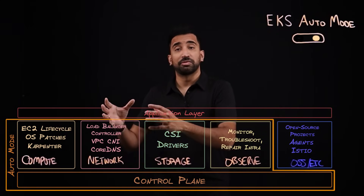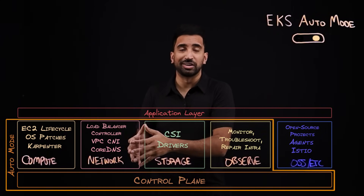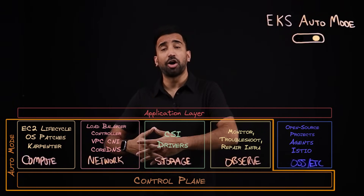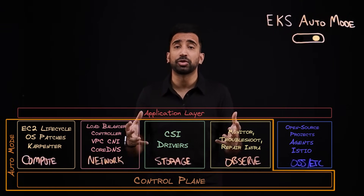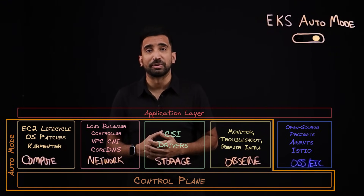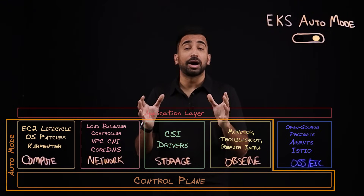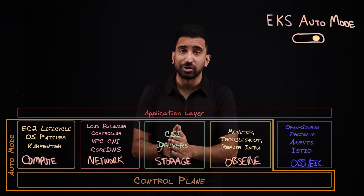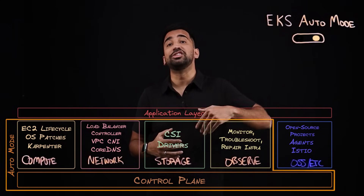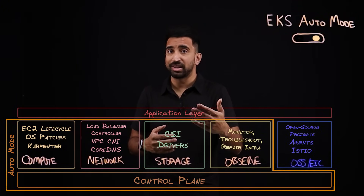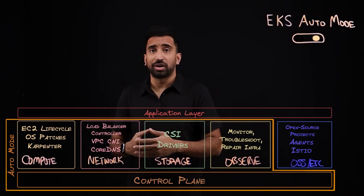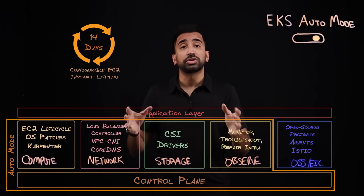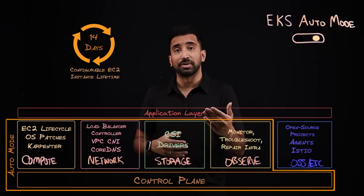One thing to mention: for things like the Karpenter controller, you no longer have to worry about managing a dedicated node just for Karpenter. In fact, for all of these core capabilities, you don't have to worry about the compute — that's going to be managed for you. For EKS upgrades, you still get to decide when you want to roll out an upgrade. When you bump the control plane up, any new instances that join your cluster are going to be the latest version, and existing instances will be updated gradually. All core capabilities are going to be managed through upgrades as well.